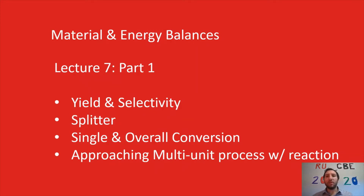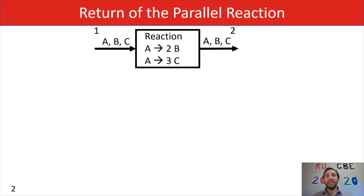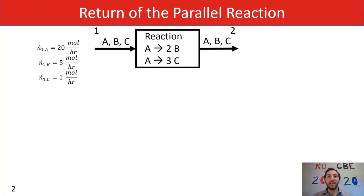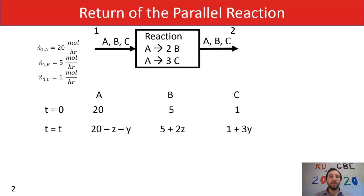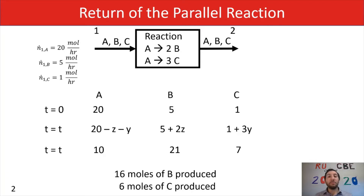To start with our yield and selectivity definitions, we're going to return to an example from lecture six. In lecture six, we had this parallel reaction where we had A reacting to form 2B and A reacting to form 3C. In this system, we knew we had molar flow rates coming in of 20 moles per hour of A, 5 moles per hour of B, and 1 mole per hour of C. We figured out that at T equals T, we have 10 moles of A, 21 moles of B, and 7 moles of C exiting our reactor. Looking at the change in moles entering and exiting, you would see that you've generated 16 moles of B and 6 moles of C.